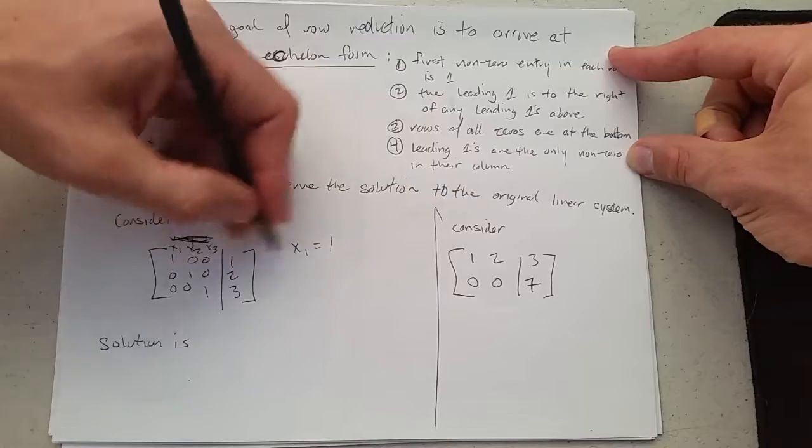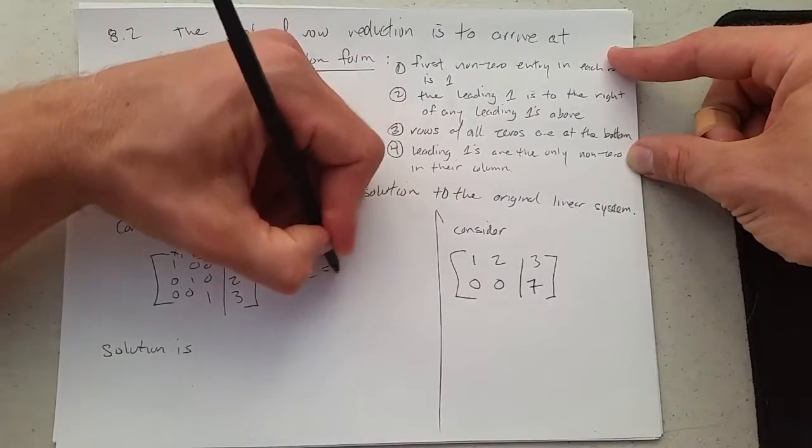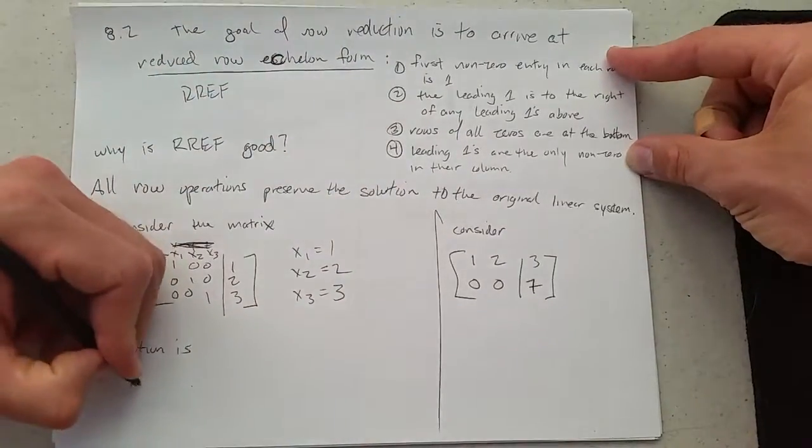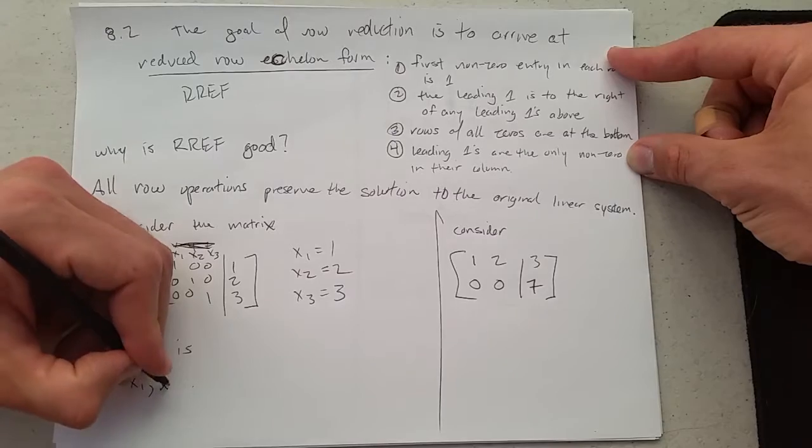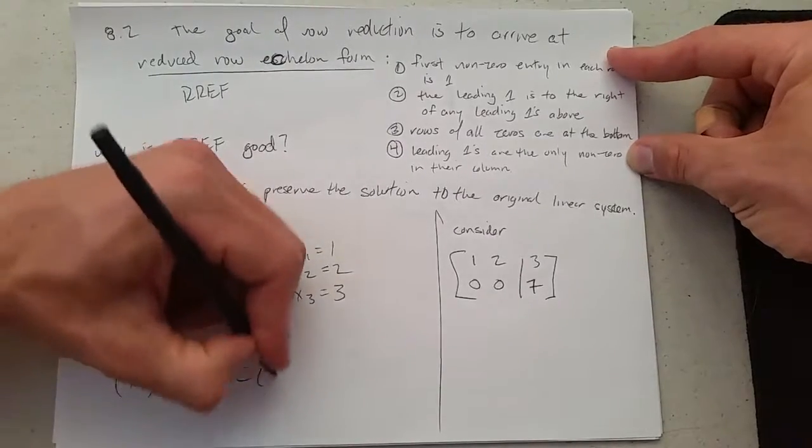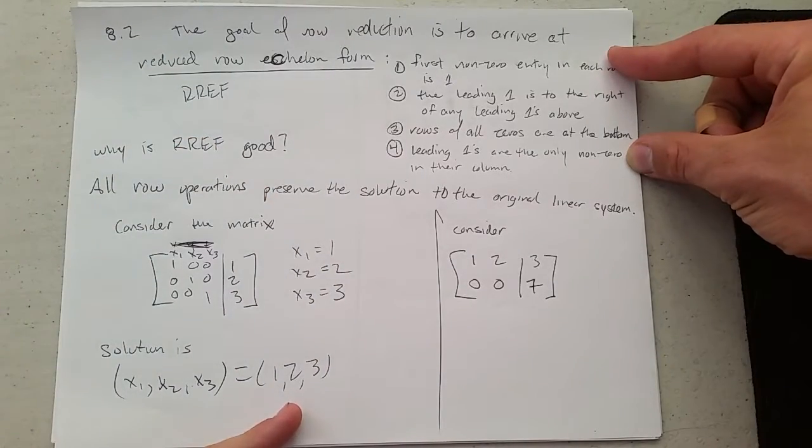x1 equals 1. That's row 1. 1x2 equals 2. And 1x3 equals 3. So our solution is the point (1, 2, 3). So this has a single solution, no free variables.